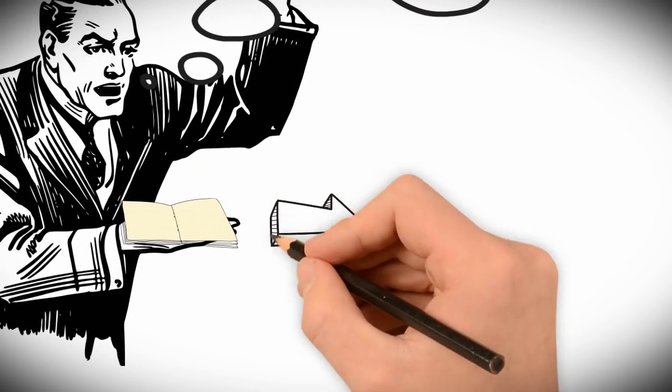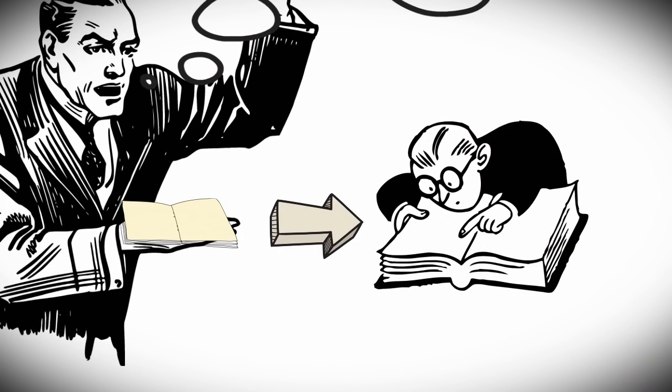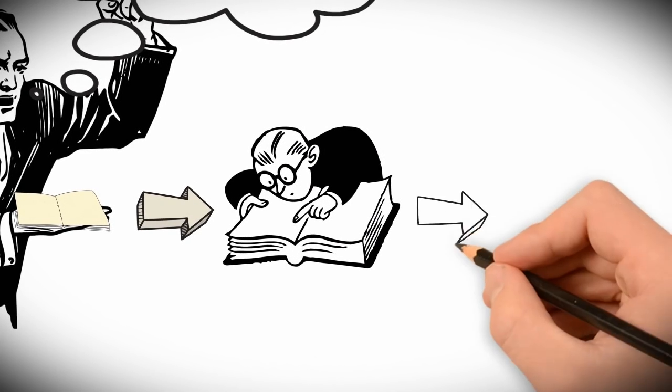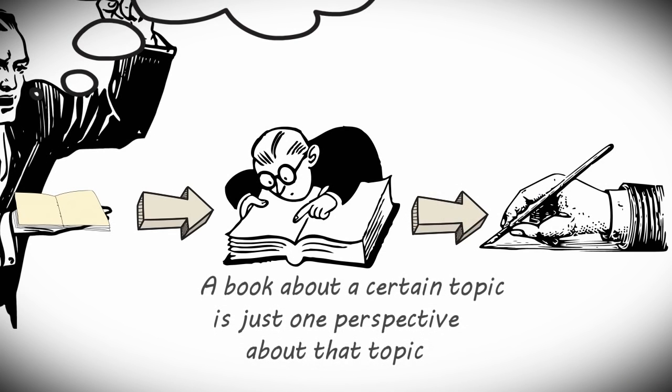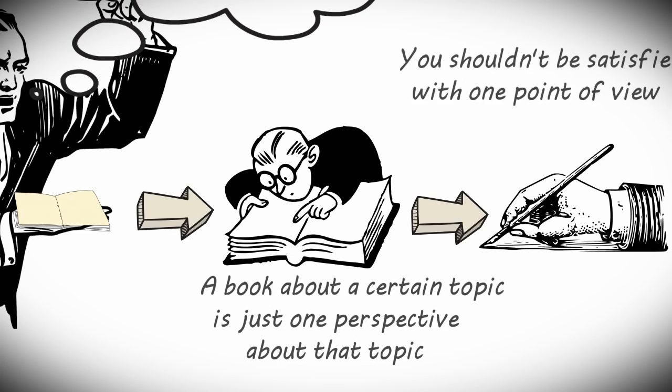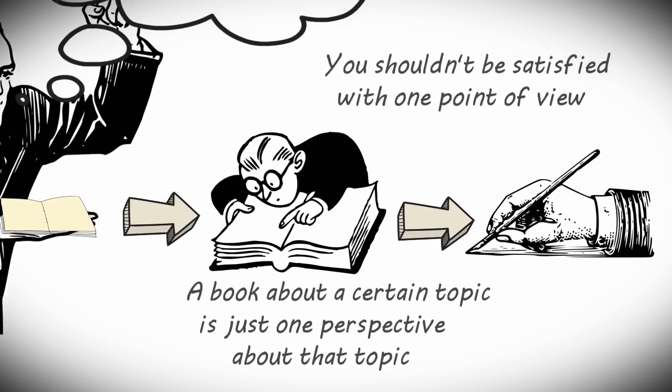The book that you cherish the most is just a bundle of compiled research. Information taken from various sources, and then coupled with the author's perspective. That's it. A book about a certain topic is merely one single perspective about that topic. You shouldn't be satisfied with one point of view.